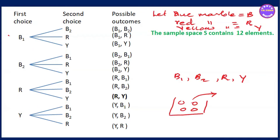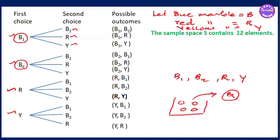The first branch is B1, B2, R, Y. If you pick B1, the second draw can be B2, R, or Y. If you pick B2, the second draw can be B1, R, or Y. These are the three diagrams — the tree diagrams — giving all possible outcomes.